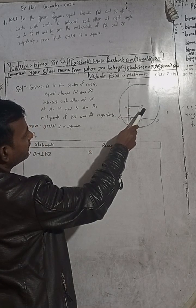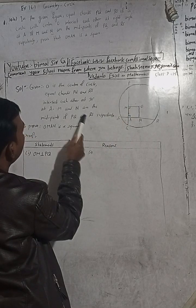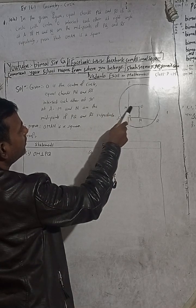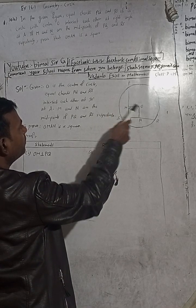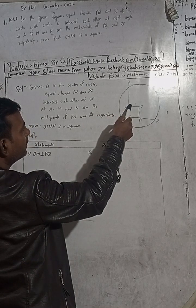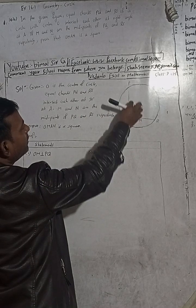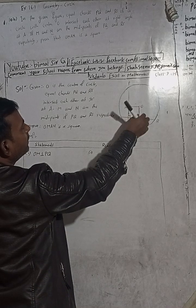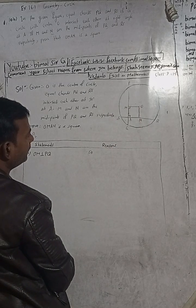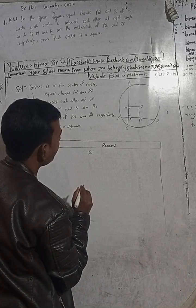The theorem we use: the line joining the center of the circle and the midpoint of the chord is perpendicular to the chord — that means the angle is 90 degrees.